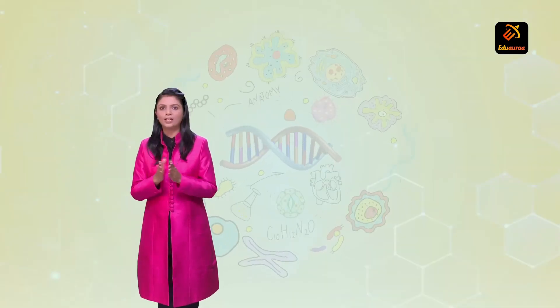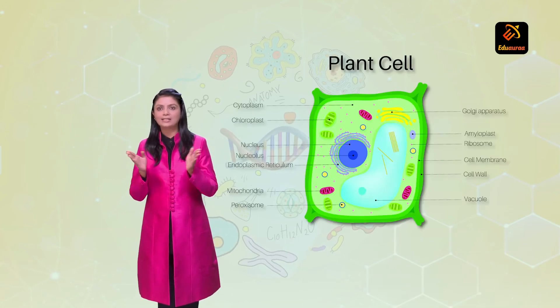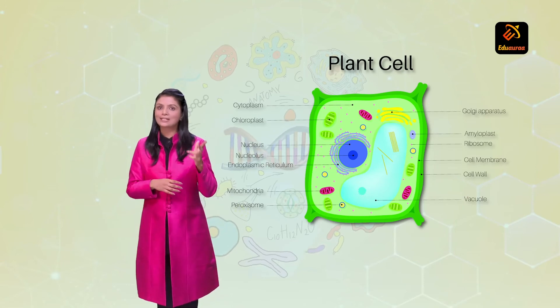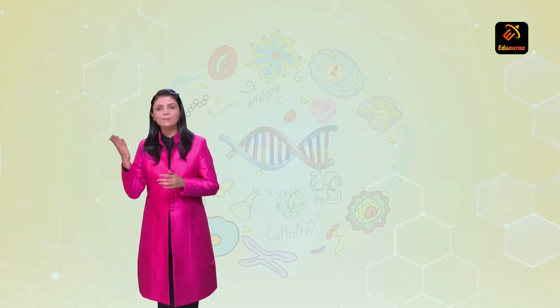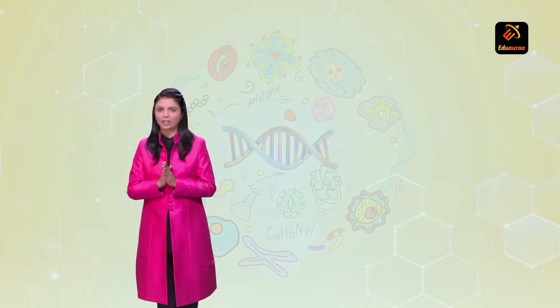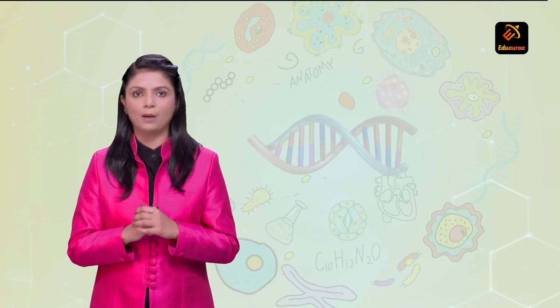Next organelle vacuoles. Remember vacuoles are present in plant cell. They are larger in size and many in number in a plant cell. An animal cell does not have vacuoles. In animal cell if they are present they are smaller and fewer in number.